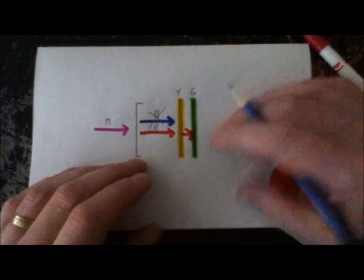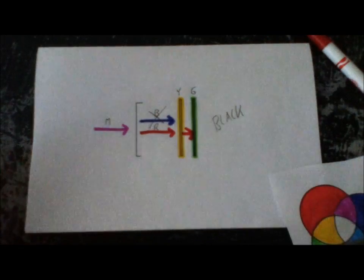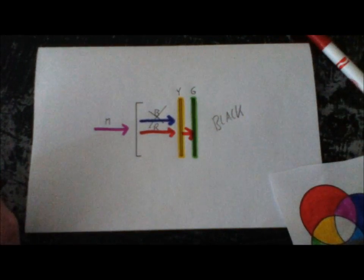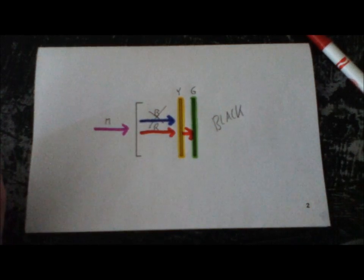So what you're going to see on the other side then is black. Remember black is the absence of light. There's no light passing through these filters. You won't see any light going into your eye. You won't see anything at all. So it's going to appear black.